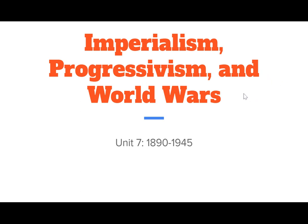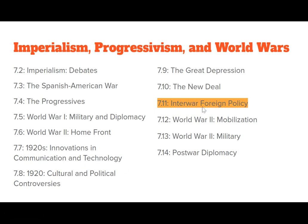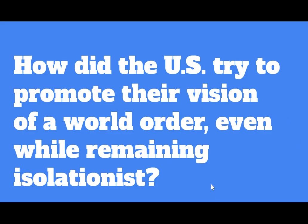Hi there and welcome to video number 8 of Unit 7: Imperialism, Progressivism, and World Wars from 1890 to 1945. This is our last video on the 1920s and 30s, and it deals with interwar foreign policy. We are going to be looking at this time period through the lens of foreign policy. So how did the U.S. try to promote their vision of a world order, even while remaining, to a certain extent, isolationist?